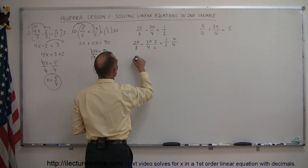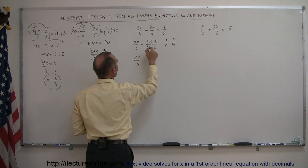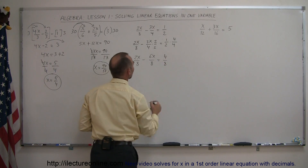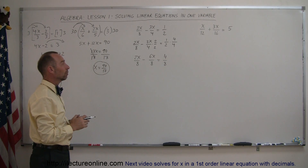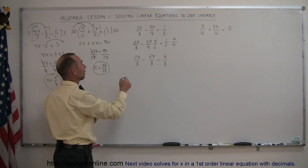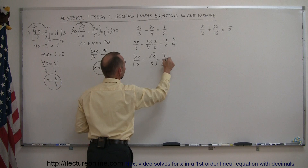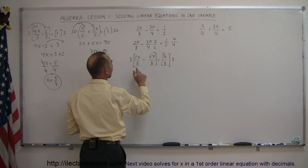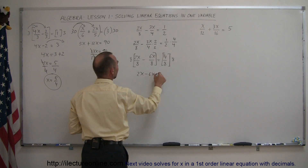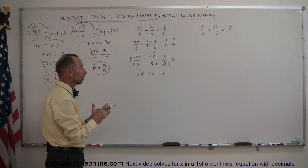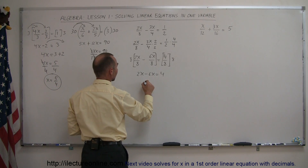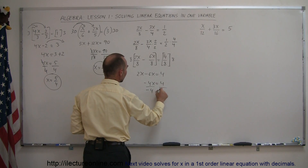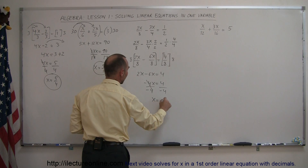After you do that, you'll end up with 2x over 8 minus 6x over 8 equals 4 over 8. Now that you have the same denominators everywhere, you can simply multiply both sides of the equation by 8 to get rid of the denominators. All denominators cancel out, so you end up with 2x minus 6x equals 4. Combining the x's gives minus 4x equals 4. Divide both sides by the numerical coefficient, and x equals minus 1.